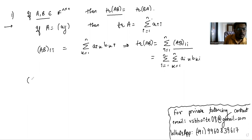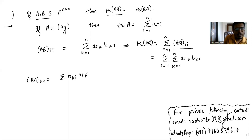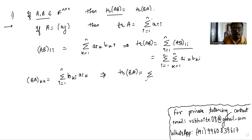Now the diagonal entry of BA is given by summation b_{ki} a_{ik} where i goes from one to n, which implies trace(BA) is basically summation k from one to n, summation i from one to n, of b_{ki} a_{ik}.